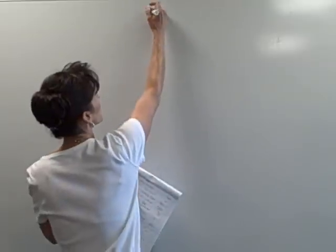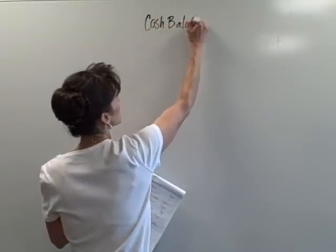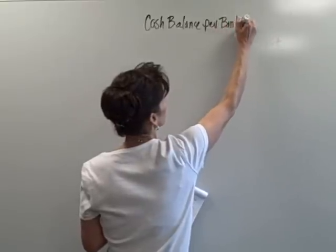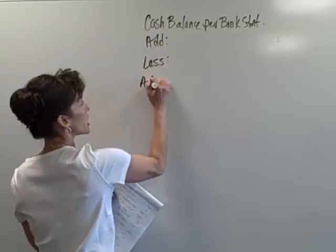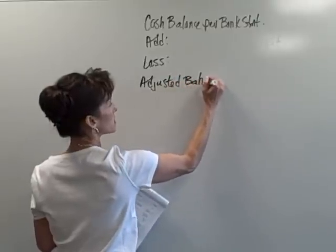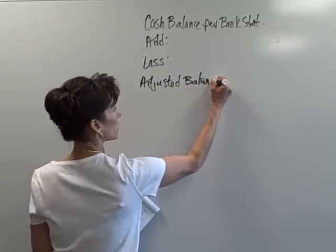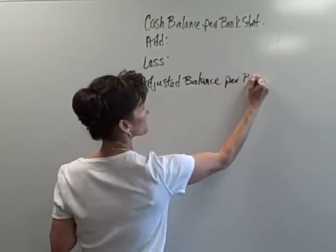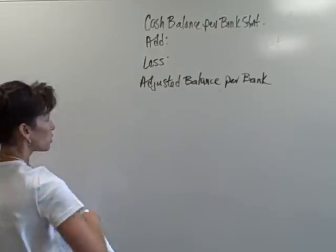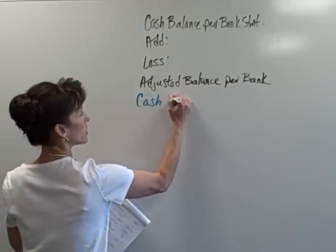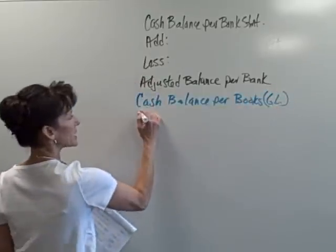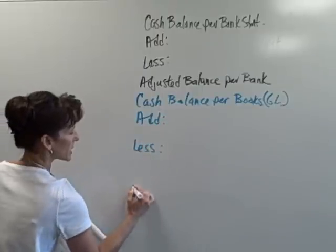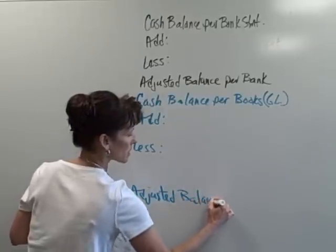We're going to draw an outline to help us facilitate that bank reconciliation. The first thing we do is write a cash balance per bank statement, and then we're going to add some things and subtract some things to get an adjusted balance per bank. Down below that we're going to continue, but we're going to do it for our books — cash balance per our books, which is per our general ledger. Then we're going to add some things and subtract some things to get an adjusted balance per books.